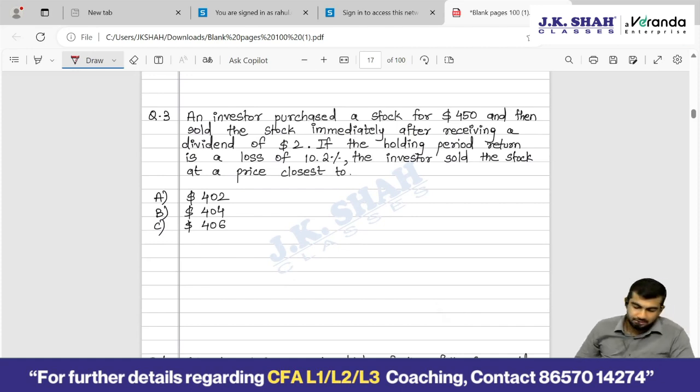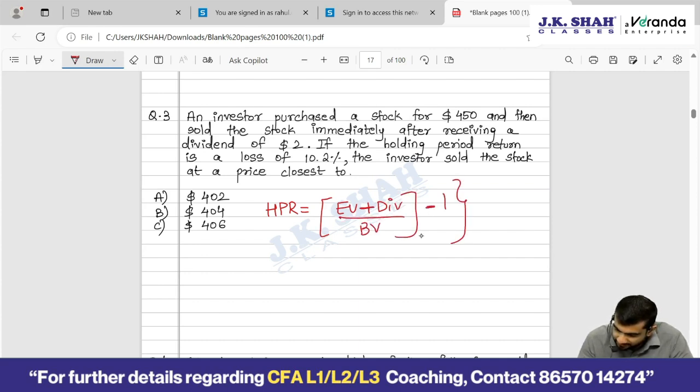They have asked you at what price is the share sold at the end of year 1. What is holding period return? Holding period return is your ending value of the share plus dividend if any upon beginning value minus 1 times 100. Holding period return is how much? Negative 10.2. Please be very careful of the signs. Ending value we don't know, we have to find that out. Dividend is how much? 2. Beginning value is how much? 450 minus 1 times 100.